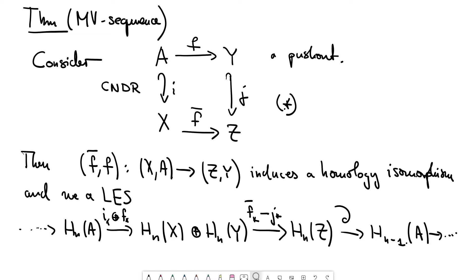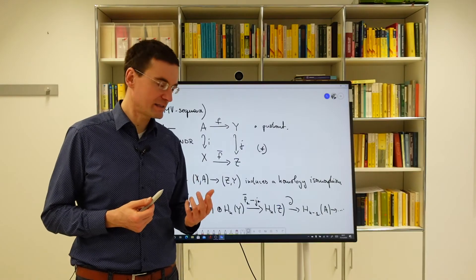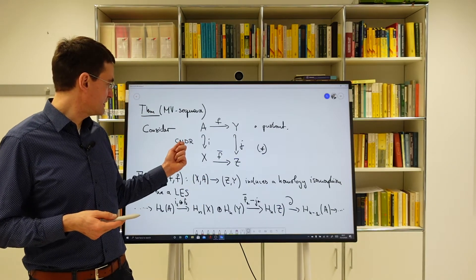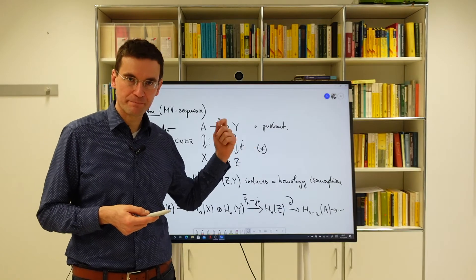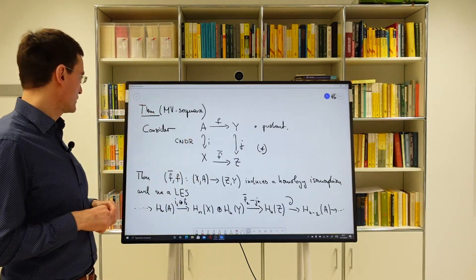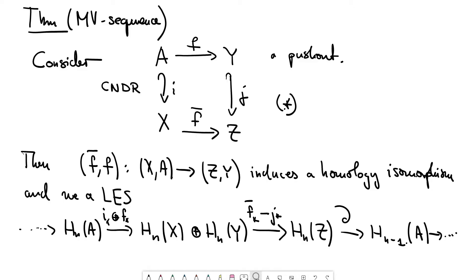We already know that when we have a closed neighborhood deformation retract in a pushout then we get automatically this property also for the opposing map J. So I and J are both closed neighborhood deformation retract in that situation.